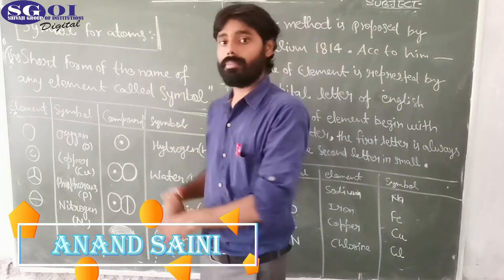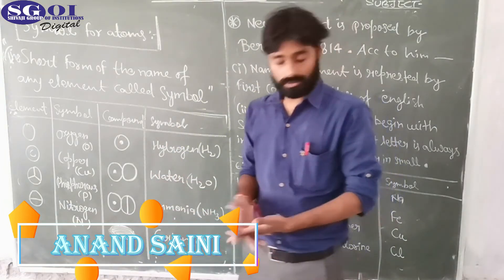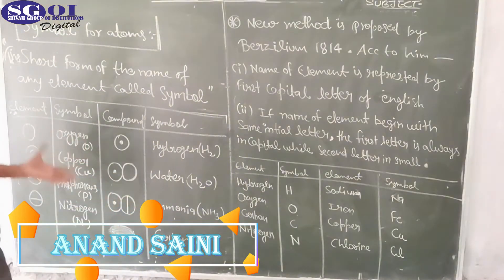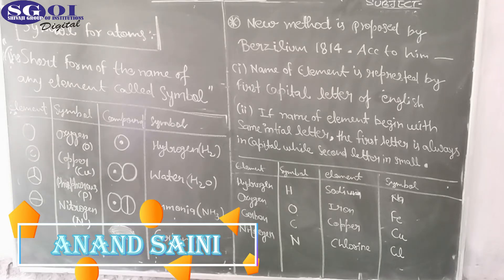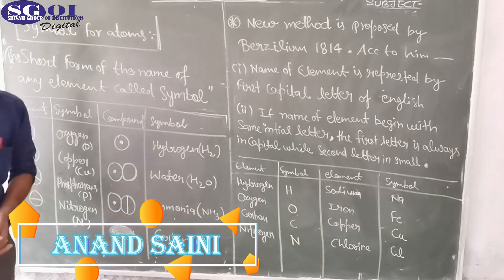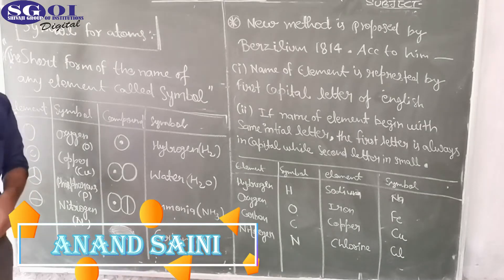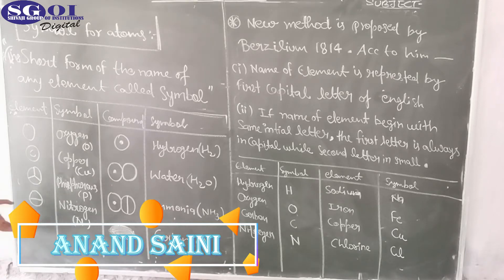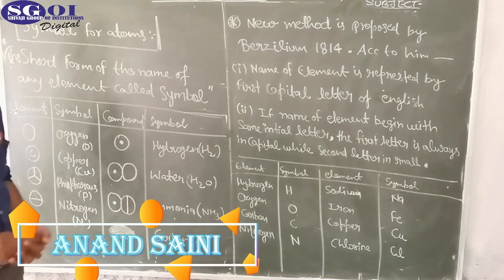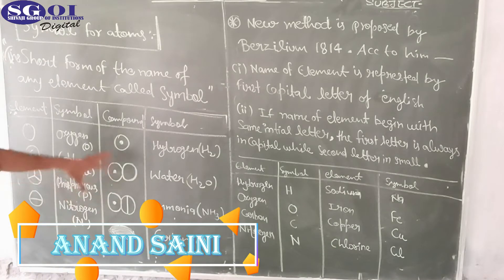According to this table — and this particular table is proposed by Dalton — element oxygen is represented by a circle shape. Oxygen is represented by O, that is a circular shape. Copper is Cu, represented by a circle. The symbol of phosphorus is also shown here. Nitrogen is symbolized like this. The molecule of hydrogen, that is H₂, is symbolized by a circle within a circle, exactly at the mid-center.